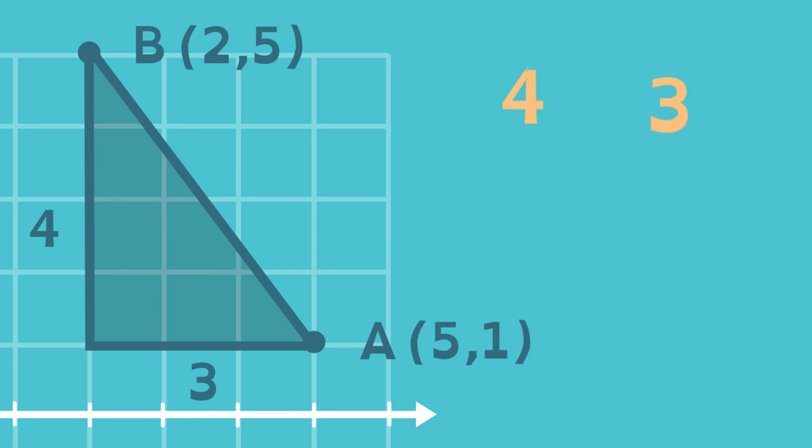Now apply the Pythagorean Theorem. 4 squared plus 3 squared is equal to 16 plus 9, which when added together equals 25. That's the same as 5 squared.